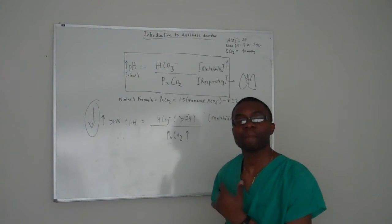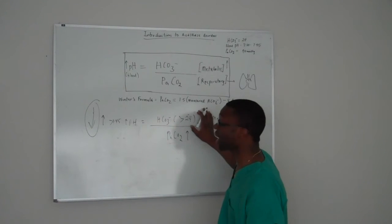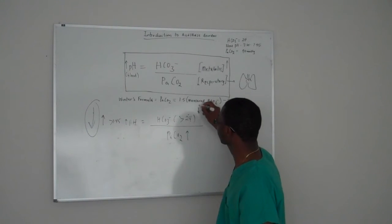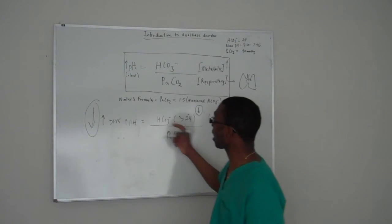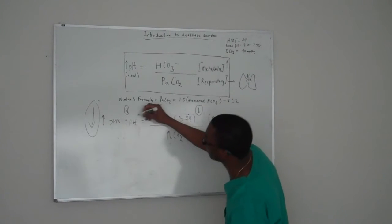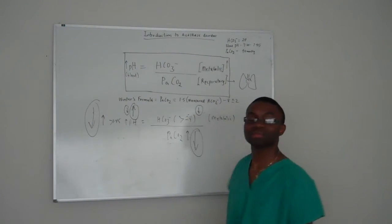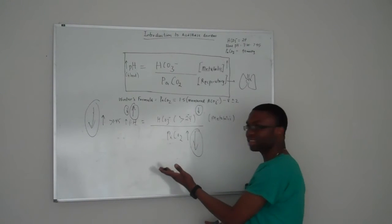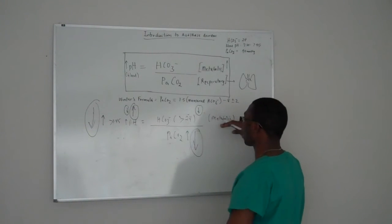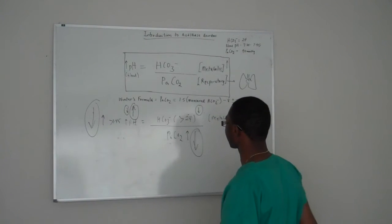And the same thing happens. Let's say your bicarb goes down. If it goes down, automatically your pH is gonna drop. If your pH drops, the only way you can bring it back up is by bringing this down. Do you see how easy it is? So basically you're going to need it going up or going there. The same thing if you start from the bottom.